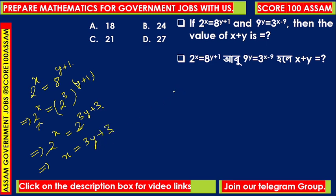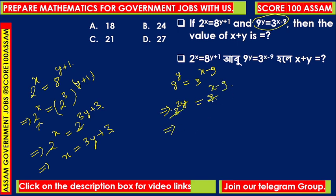Now the second part of this problem: 9 to the power y equals 3 to the power (x minus 9). We rewrite 9 as 3 squared, so 9^y = 3^(2y). Setting the exponents equal since the bases match, we get 2y equals x minus 9.